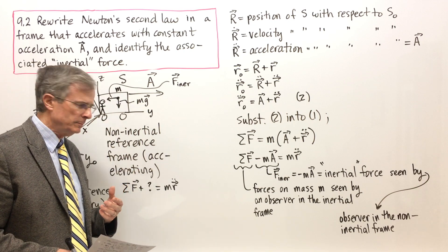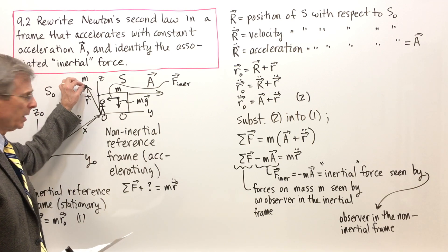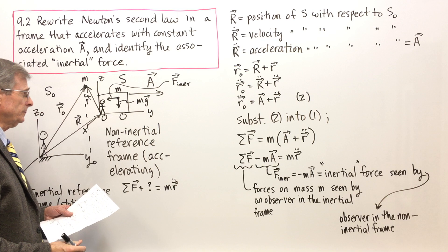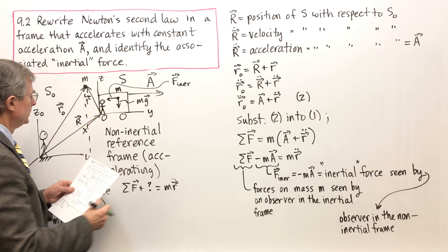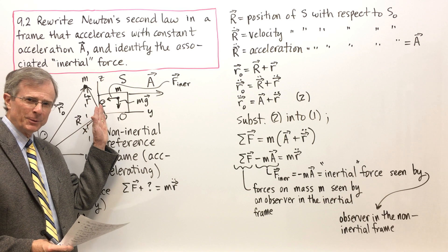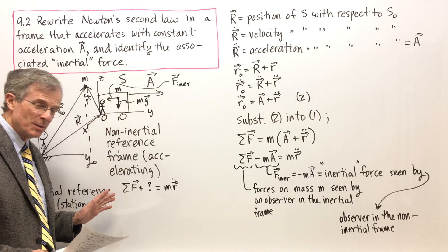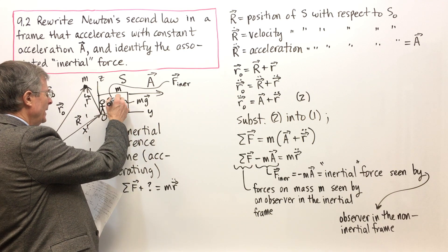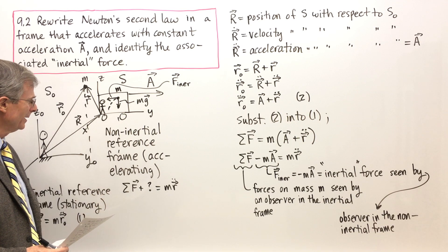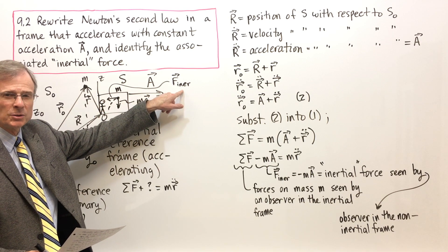What does that inertial force really represent? Say from the inertial observer's point of view, a ball is dropped from rest — it just falls straight down. But from the observer inside the accelerating car, the car is moving toward the ball as it falls. So to that observer, the ball appears to have a trajectory with a horizontal component — a relative velocity in the horizontal direction. The inertial force accounts for that apparent sideways motion of the ball as seen in the non-inertial frame.